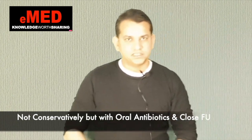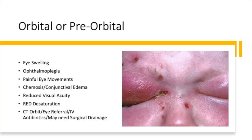Orbital cellulitis is serious; preseptal cellulitis can be managed conservatively. Orbital cellulitis will present with painful eye movements or complete ophthalmoplegia. Opening the eye, the conjunctiva will be red and edematous. Visual acuity will be reduced because the eye is involved, and if the optic nerve is involved, you will get red desaturation — the patient cannot appreciate red fully and may describe it as pink or orange.